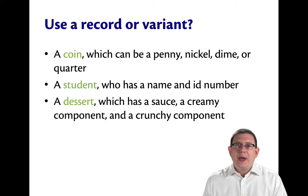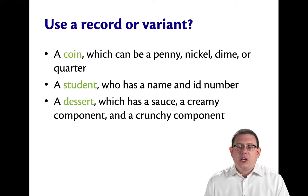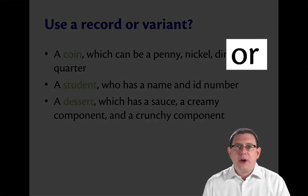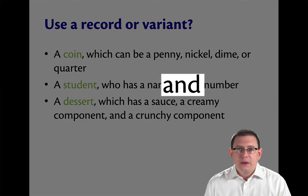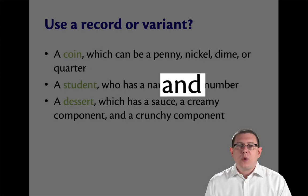A word to pay attention to is the conjunction that is used when we describe the data. When we use the conjunction OR, we're led to look for variants. When we use the conjunction AND, we're led to use records.